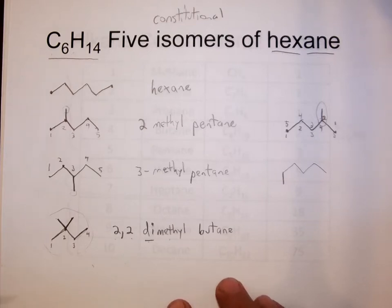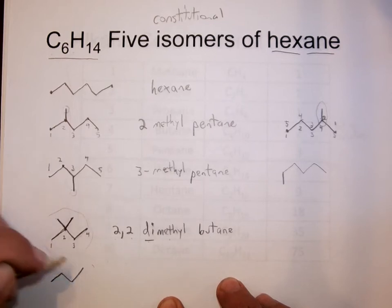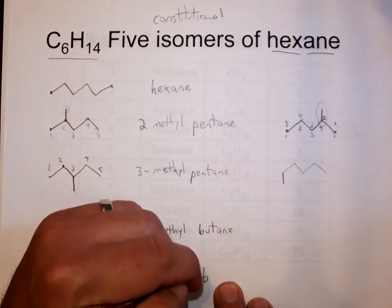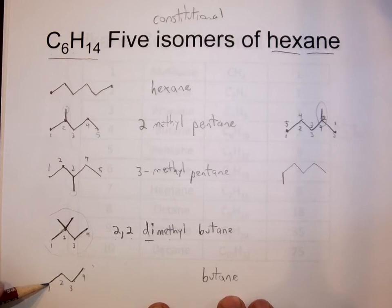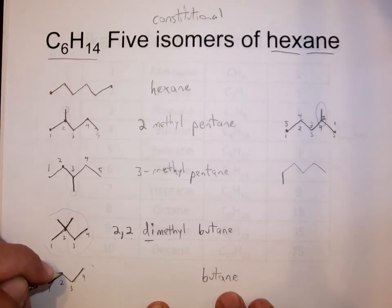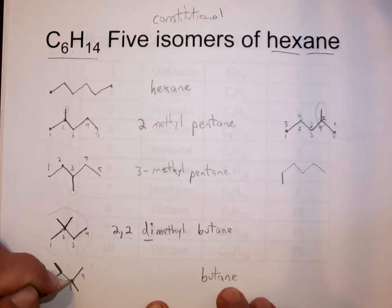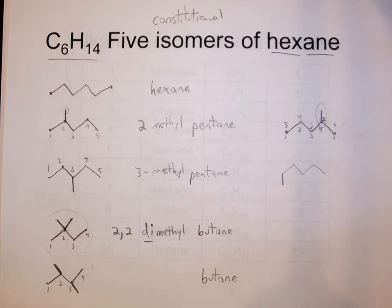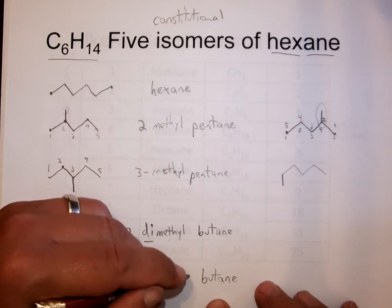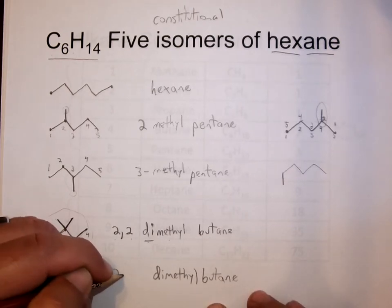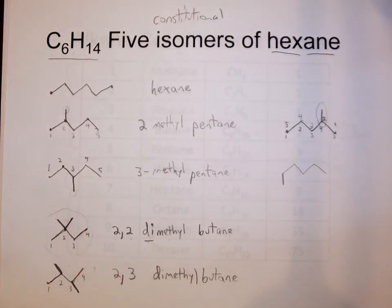The last possibility: again a butane with one, two, three, four carbons in a row as the longest chain. We can't add a carbon to the first carbon because that just makes the chain longer. We add a branch to the second carbon, and then we put the other branch off the third carbon. So now we have two different methyl groups — we call it dimethylbutane. Four carbons in a row is the longest chain, with two one-carbon substituents: one hanging off the second carbon and one off the third carbon. So: 2,3-dimethylbutane.